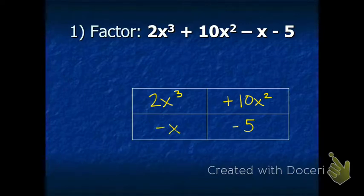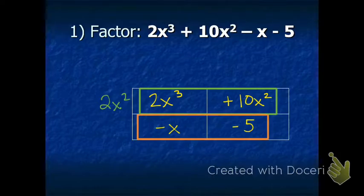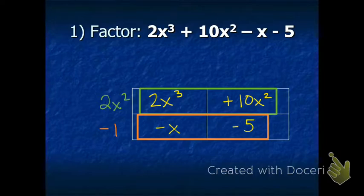Now we have four different binomials that we are going to factor by finding the greatest common factor. The first set of binomials is 2x to the third and positive 10x squared. We factor out the greatest common factor, which is 2x squared, and write it on the left side. The next set of binomials is negative x and negative 5. There isn't anything that goes into both other than negative 1, so the greatest common factor is negative 1.